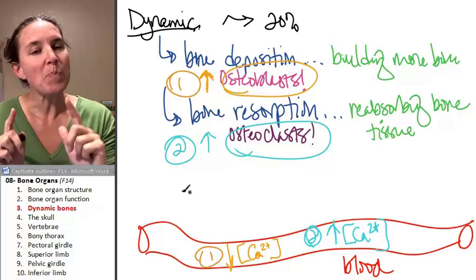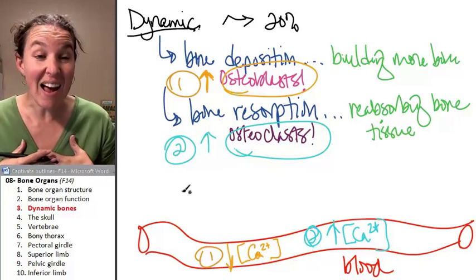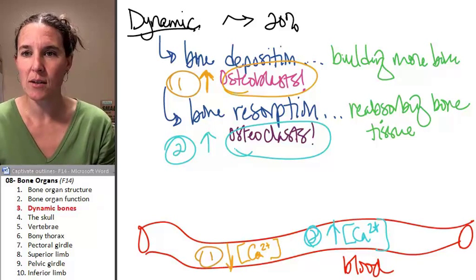Now, if the blasts are active, they're building more bone, they can actually build bone bumps. What? They can.